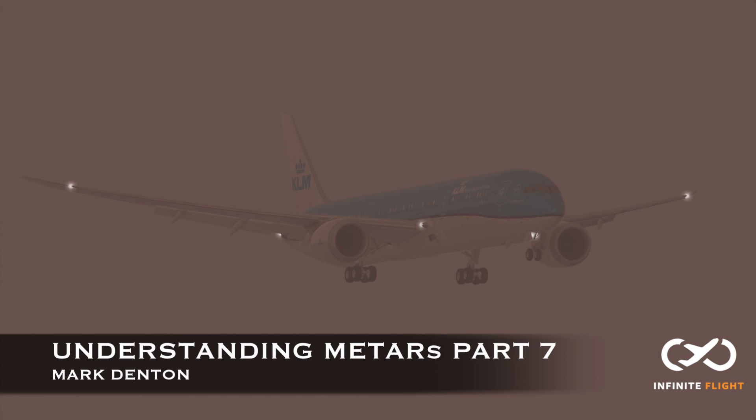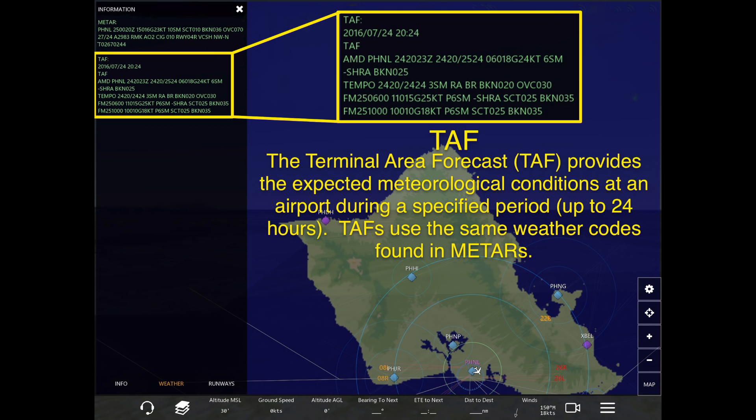Hey guys and welcome back to our Infinite Flight video training series. This is Mark, and today we conclude the understanding METARs series with part 7, where we discuss TAFs. First, what is a TAF? TAF stands for Terminal Area Forecast and it provides the expected meteorological conditions at an airport during a specified period, often up to 24 hours.